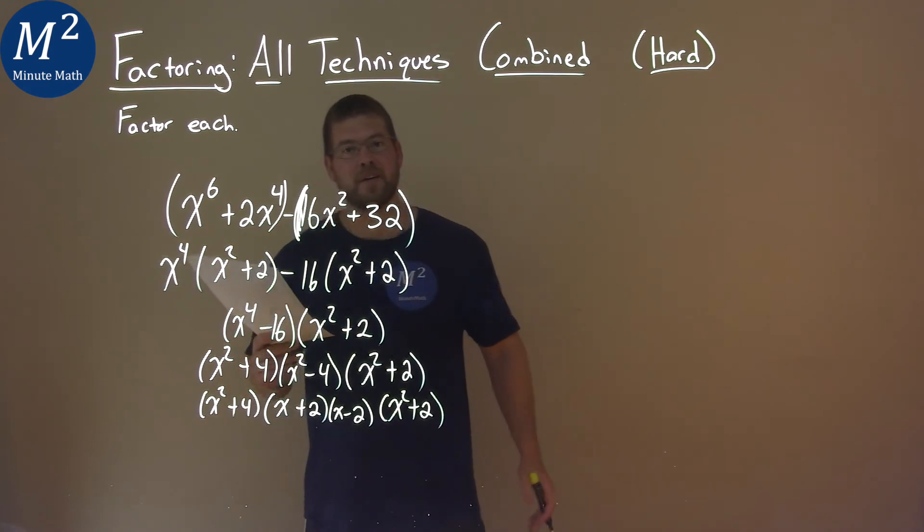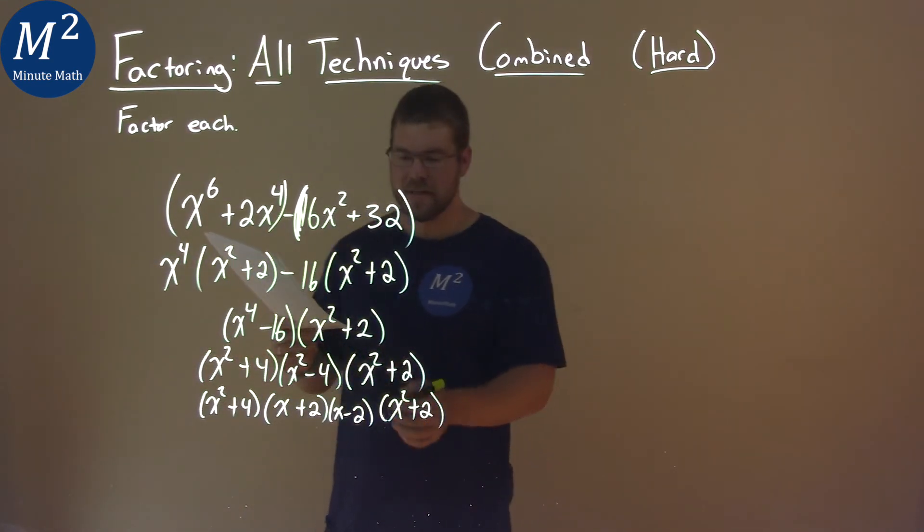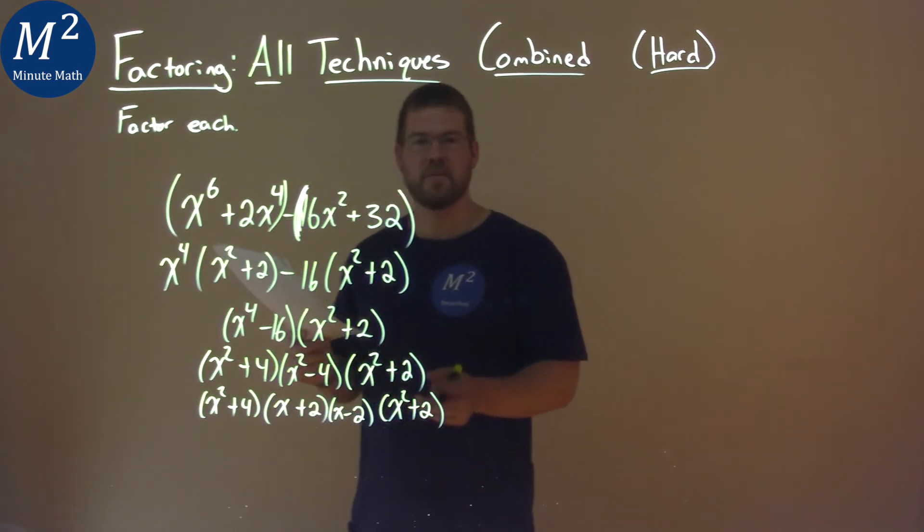So, after all that, our final answer here is x squared plus 4 times x plus 2 times x minus 2 times x squared plus 2.